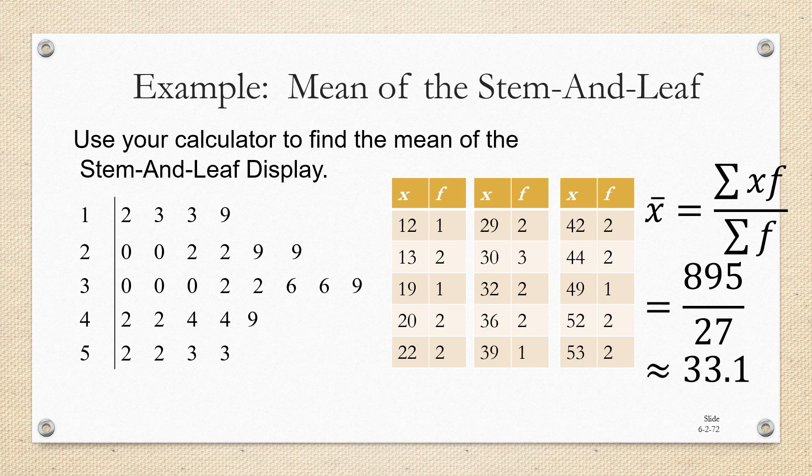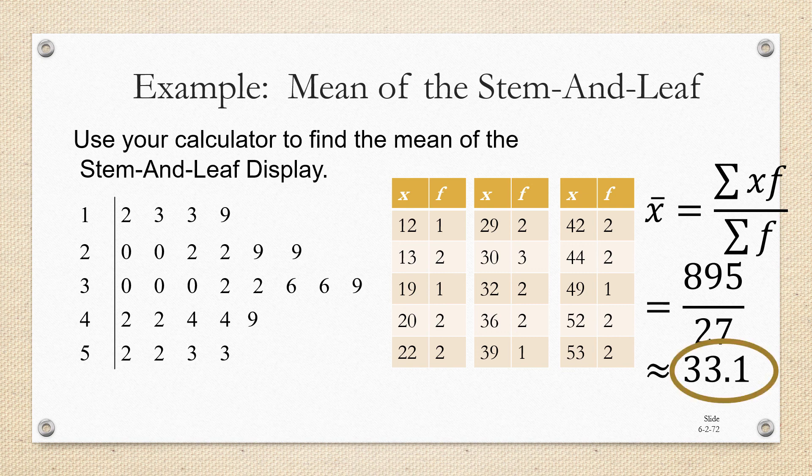And when you add up the frequencies of course you get 27 because remember the sum of the frequencies is the number of data values. We already knew that there were 27 data values. So if you divide 895 by 27 you get about 33.1.